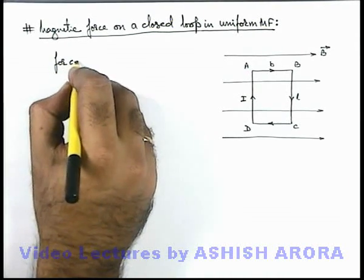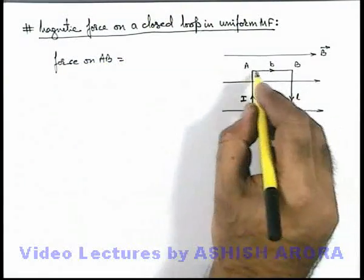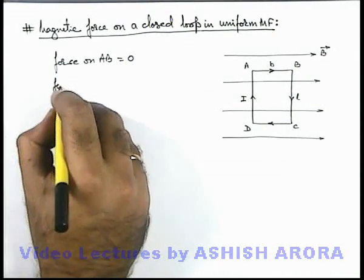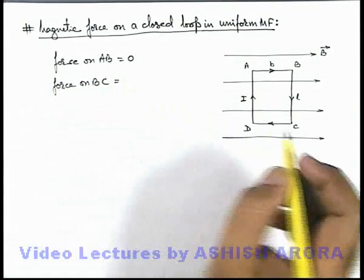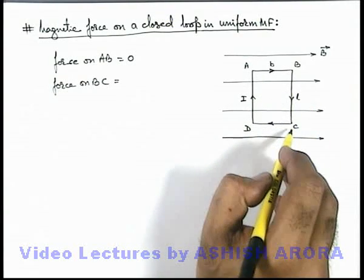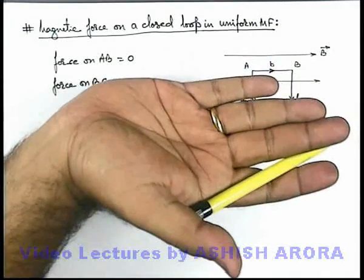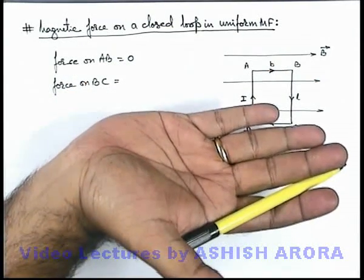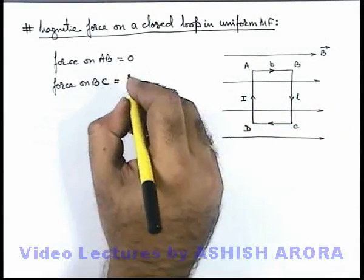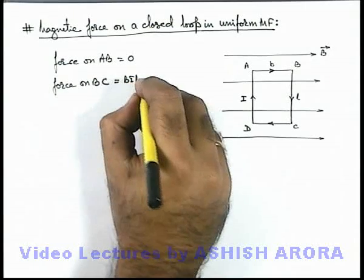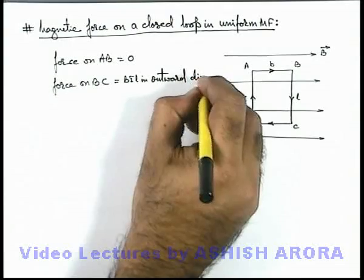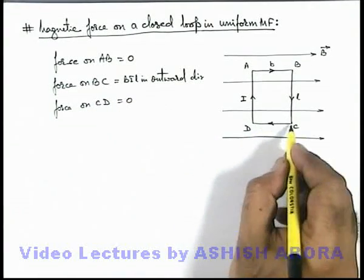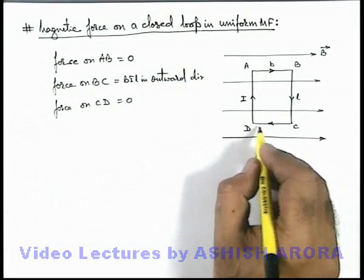For section AB, the current is flowing parallel to magnetic induction, so the force on it is zero. For section BC, the magnetic induction is toward the right and the current is in the downward direction. Using the right-hand palm rule — fingers pointing in the direction of magnetic induction and thumb in the downward direction — the palm face points in the outward direction. So the magnetic force on BC is BIl in the outward direction. For section CD, the wire is again parallel to magnetic induction, so the force is zero.